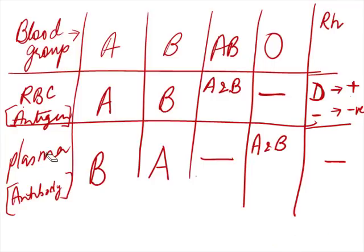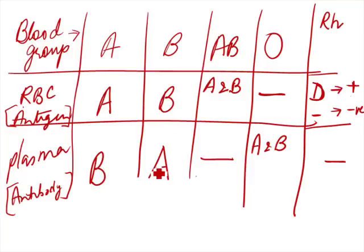Now let's look at the plasma. When the blood group is A, the antibody present in the plasma is B, so that there is no interaction — because if there was antibody A, it would interact with antigen A. If the person's blood group is B, then the antibody in the plasma is A. If their blood group is AB, since they have both A and B antigens, we cannot have any antibodies in the plasma. And if it's O group, the person has no antigen, so they have both antibodies in the plasma.